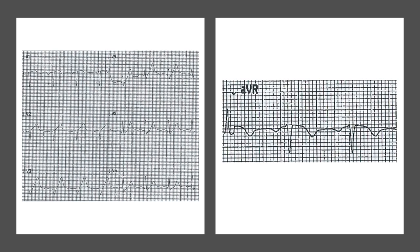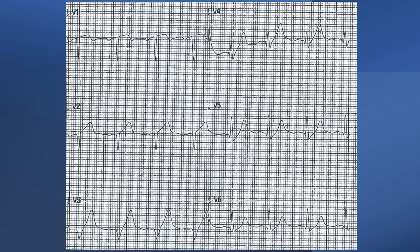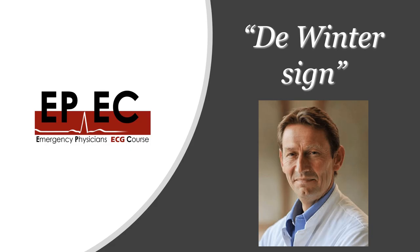Looking more closely at AVR, we can clearly see ST elevation. In the anterior leads, we also have poor R wave progression, which is another sign of ischemia. Then we see the ST depression that is upsloping, followed by a tall symmetrical T wave. That odd-looking upsloping ST segment followed by a tall symmetrical T wave is what is called the De Winter sign.